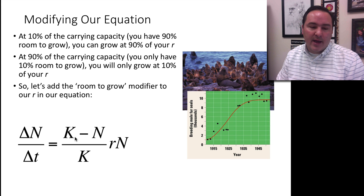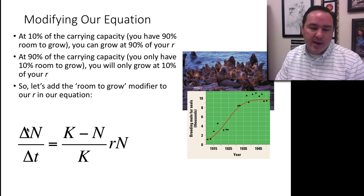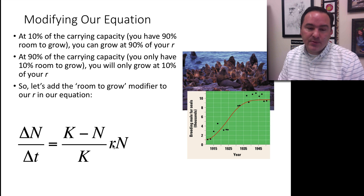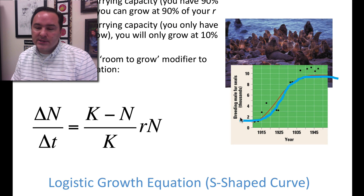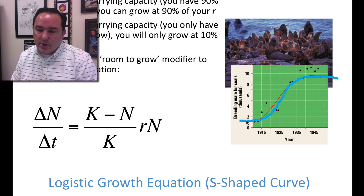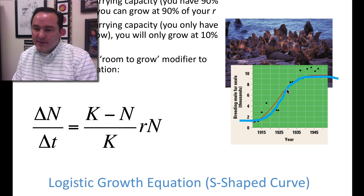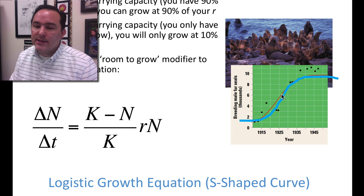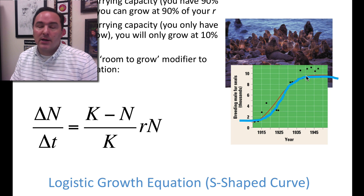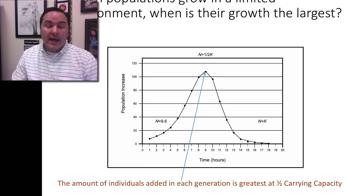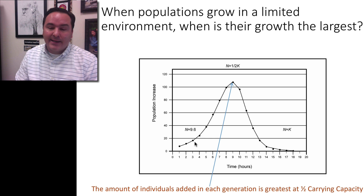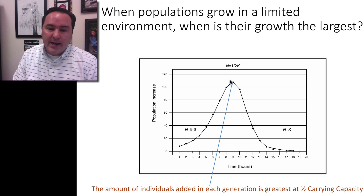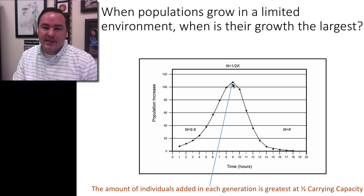We can put all of this into our equation: the change in population size over time equals K minus N over K, times the rate R, times the population size N. When we do this, it produces that S-shaped curve — you start off slow, hit a middle region where you're growing at your fastest rates, then slow back down because there's not a lot of room to grow. If you map out the number of individuals added per generation, the greatest peak is right at half the carrying capacity — that's when growth is happening at its greatest speed.